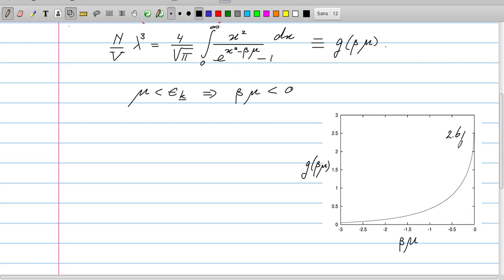So that's the maximum value that can be assumed by this function g(βμ). Now this has dramatic consequences because we see that the density n/V is directly related to g(βμ), and this seems to impose that there is a maximum imposed to the density of the particles.